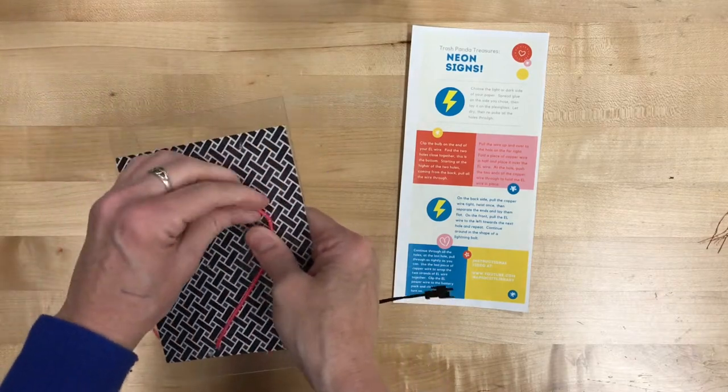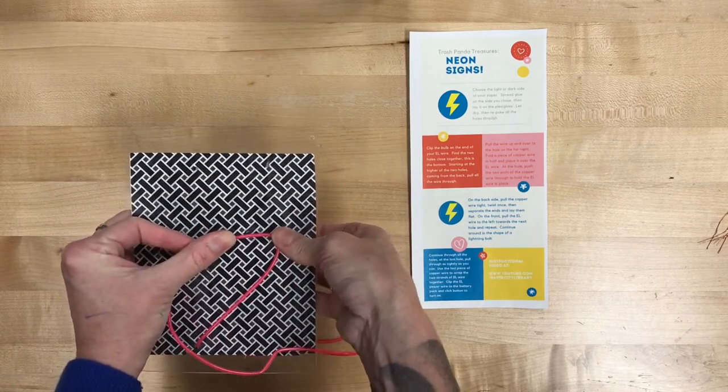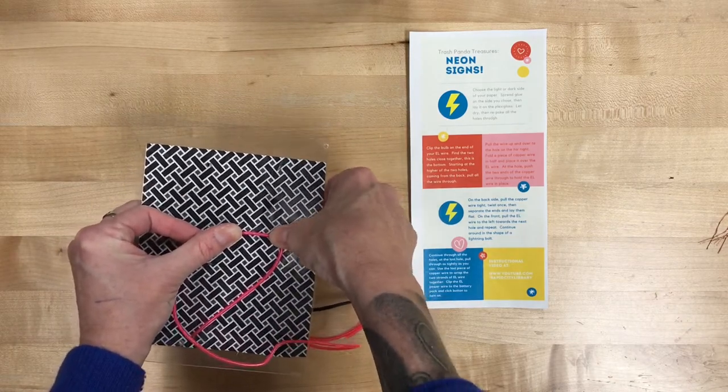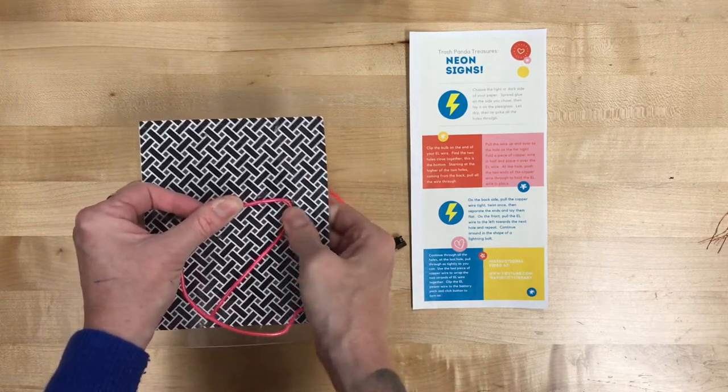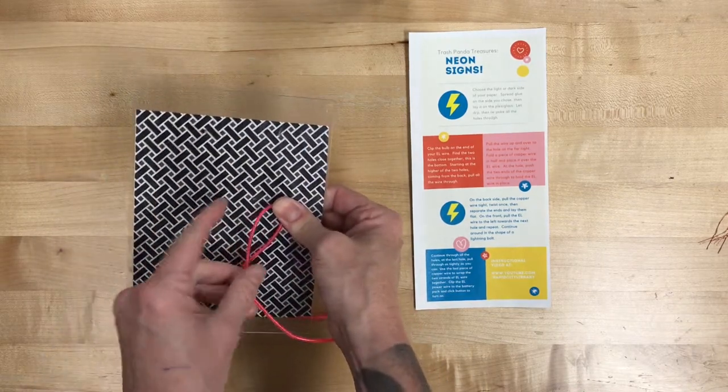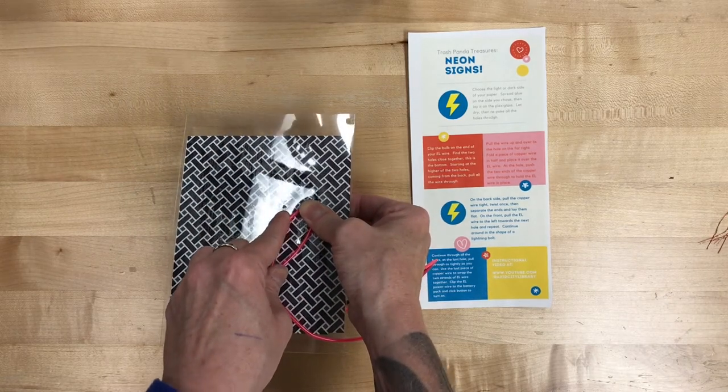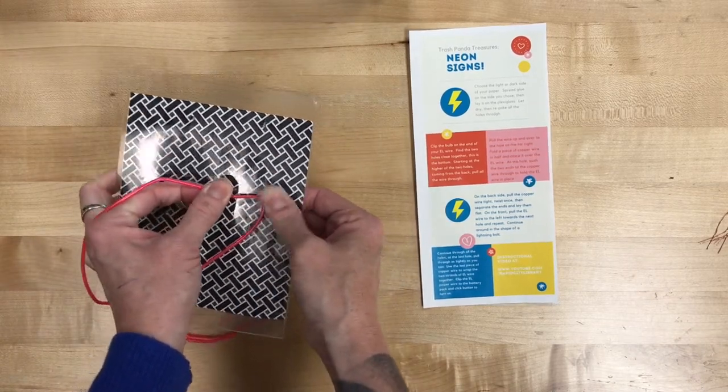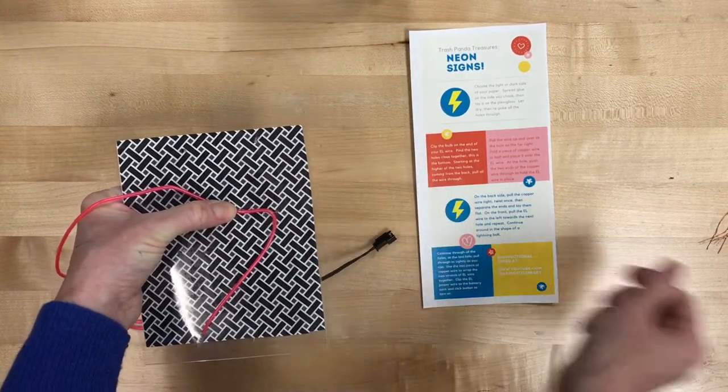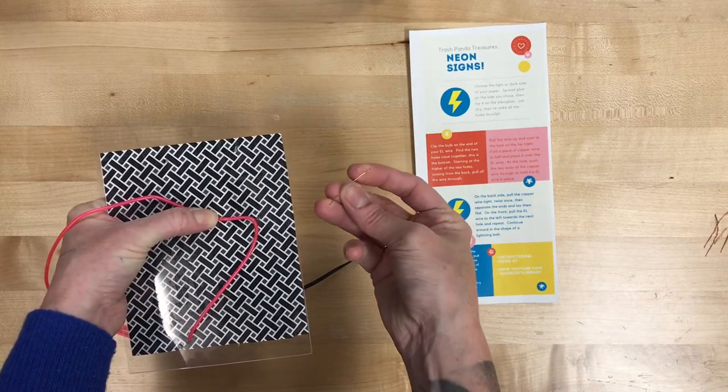Now the next part of that lightning bolt is a hard turn back to the left. And there should be another hole just a little ways to the left from that one that we just used. And we're gonna do the same thing. We're gonna grab a piece of that copper wire. And if you want to be smarter than me you could have already bent all of your copper wire. I did not do that but that might not be a bad practice.